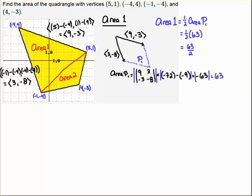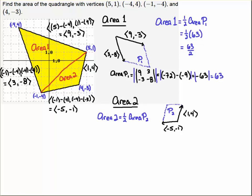Likewise, I'm going to find the area of region 2. Again, I find the vectors. I'm assuming that (-1,4) is the head and (4,-3) is the tail here, so I subtract head minus tail and I get (-5,-1).